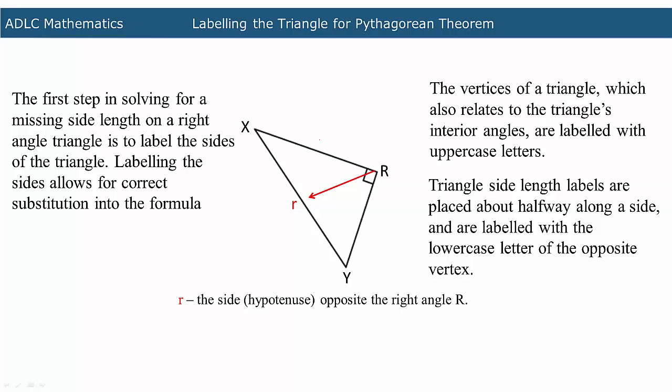R is the side opposite the right angle R, also called the hypotenuse.